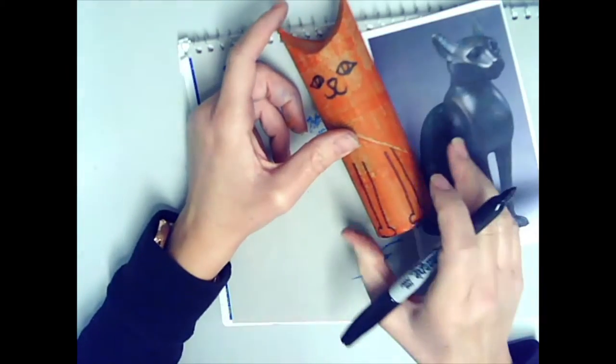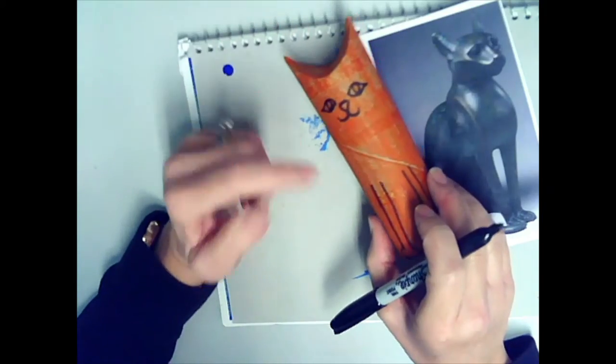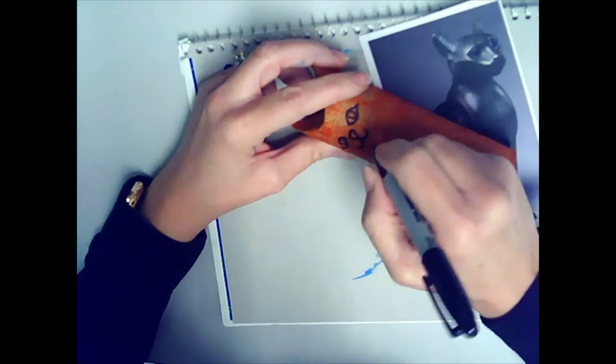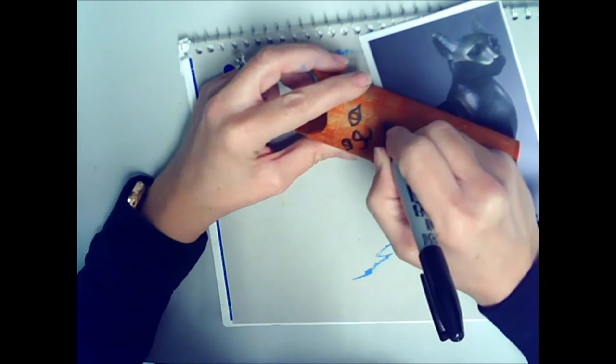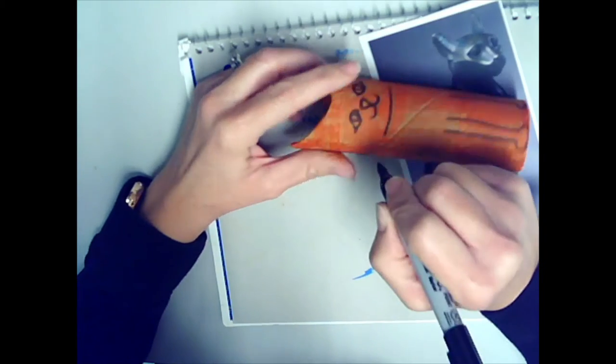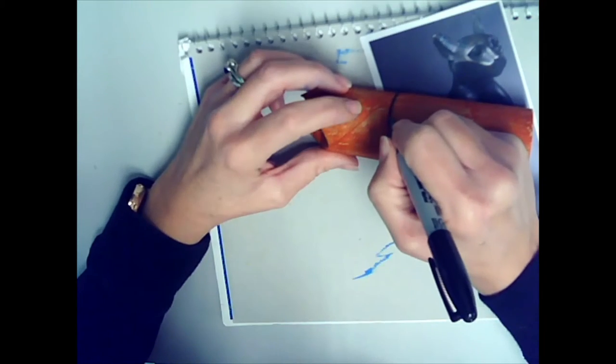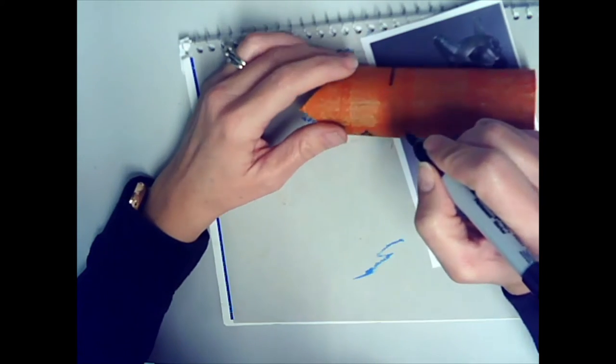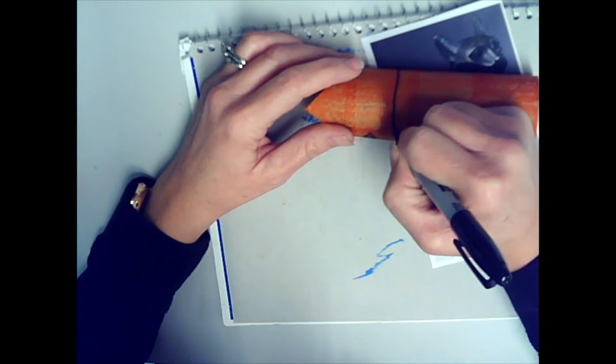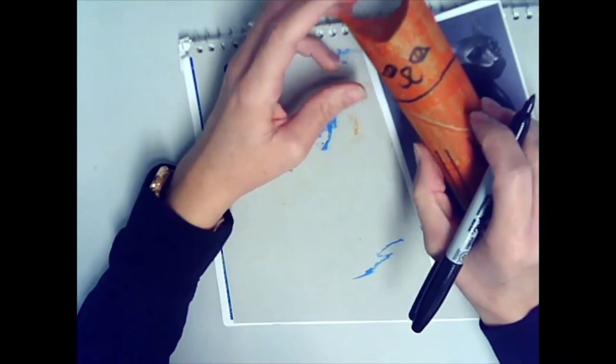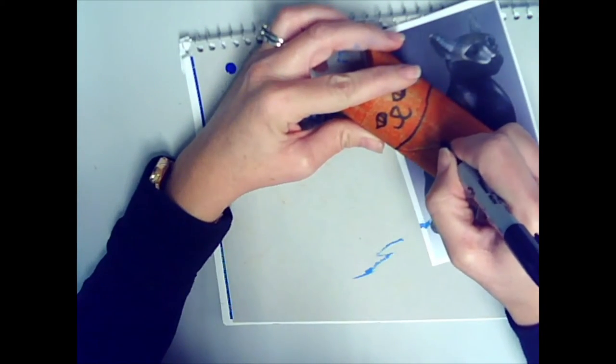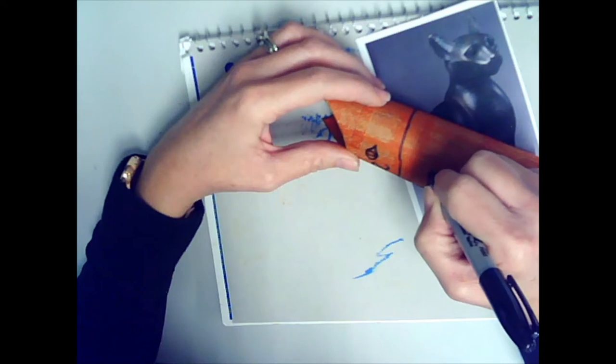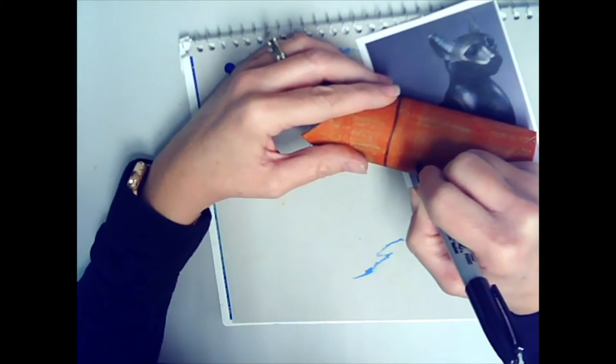Now if you have sequins or glitter around your house you can definitely use that stuff on your cat to decorate it. One of the things that I'm going to do is make its collar. So underneath its face I'm going to draw a line all the way around. You'll see how well I do staying in line as I come around to the other side. Not too bad. I'm going to give it a nice wide collar that I'll get to decorate.